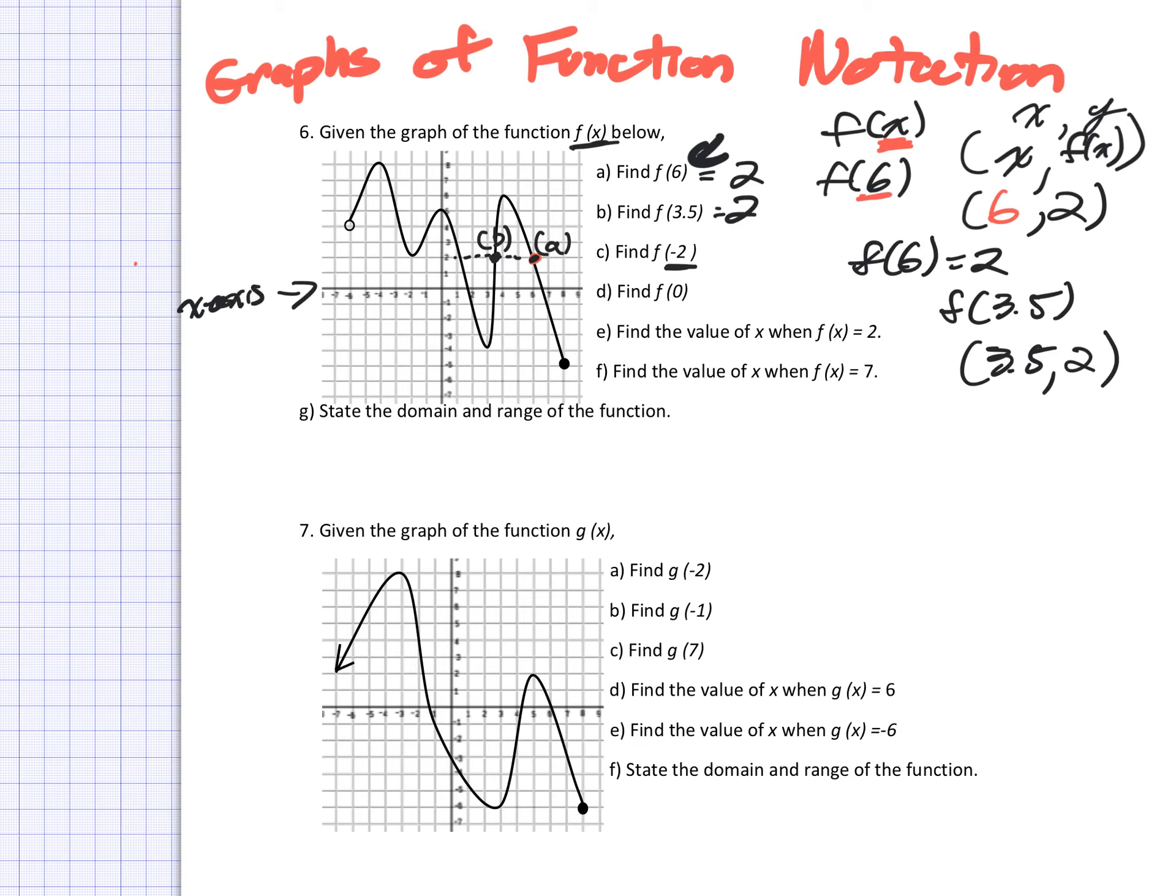f(-2), we travel over to negative 2. We go up to our f value. Hey, it looks like the value is 2 again, and I can label that as C. f(0), we're on 0 on the x-axis. That could be the label of D. And we know that that happens to equal 1, 2, 3, 4. Looks like it's the value of 5.